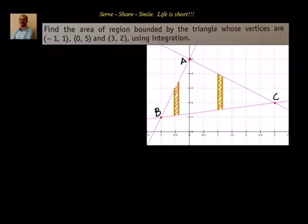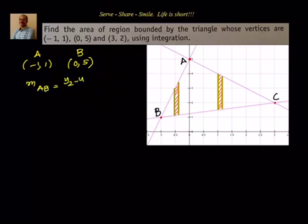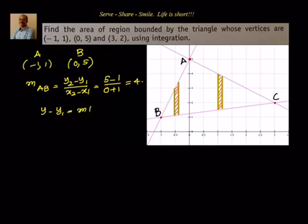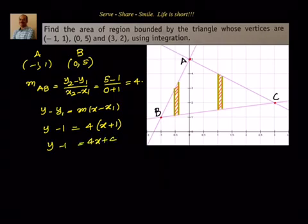For line AB, we take points A = (-1, 1) and B = (0, 5). The slope m equals (y2 - y1)/(x2 - x1) = (5 - 1)/(0 + 1) = 4. Applying point-slope form: y - 1 = 4(x - (-1)) = 4(x + 1), so y - 1 = 4x + 4, giving y = 4x + 5.